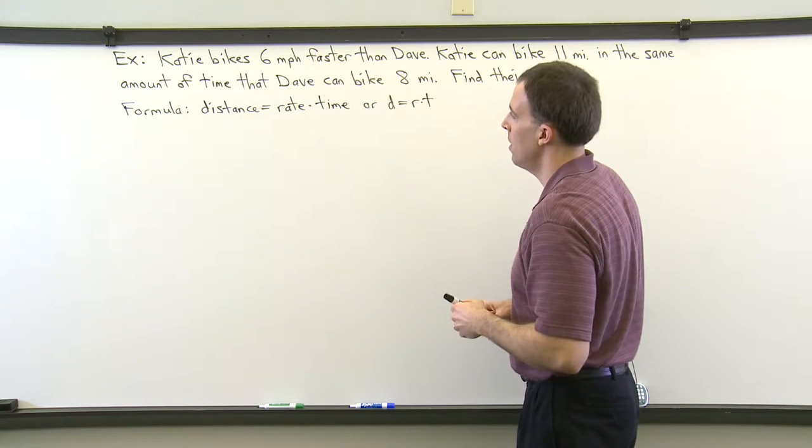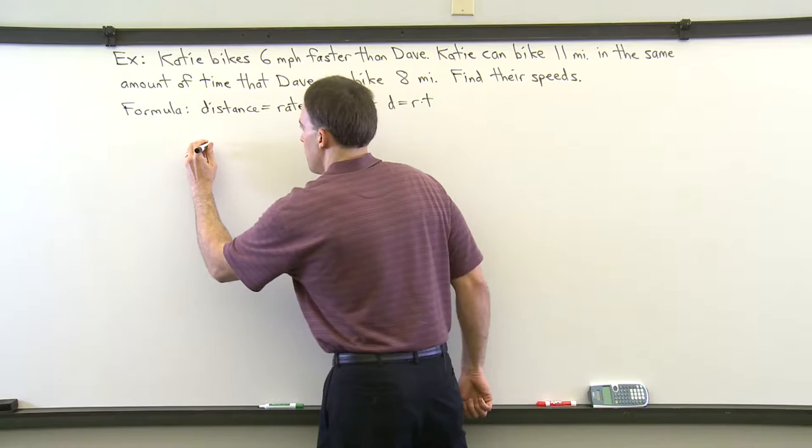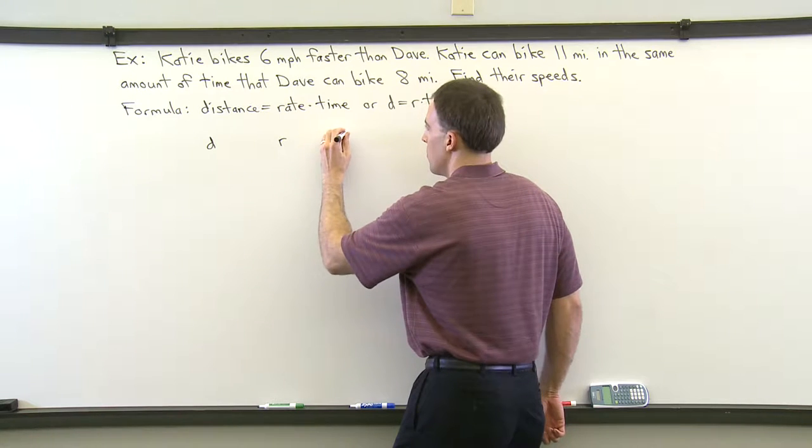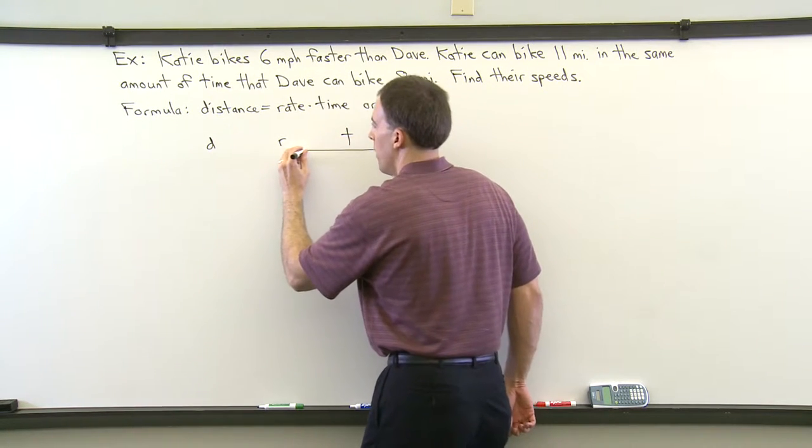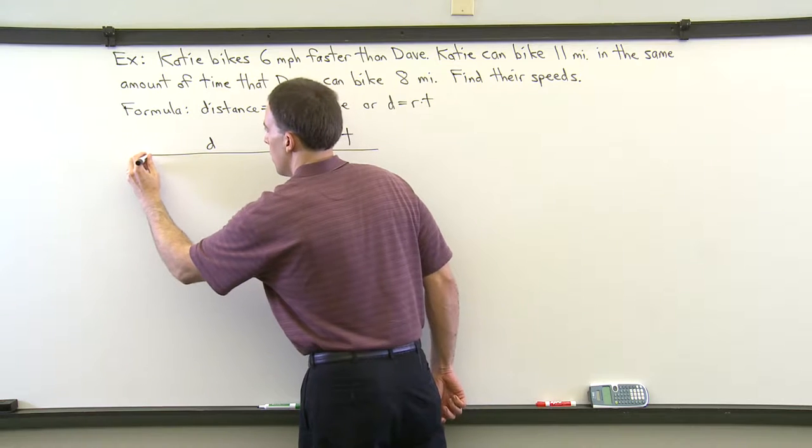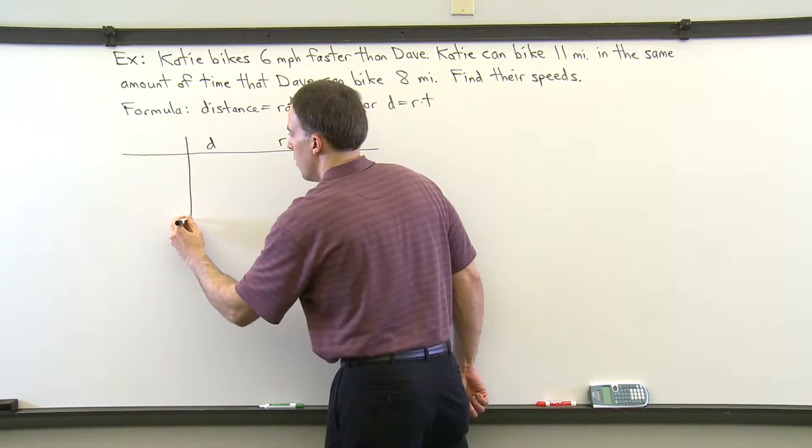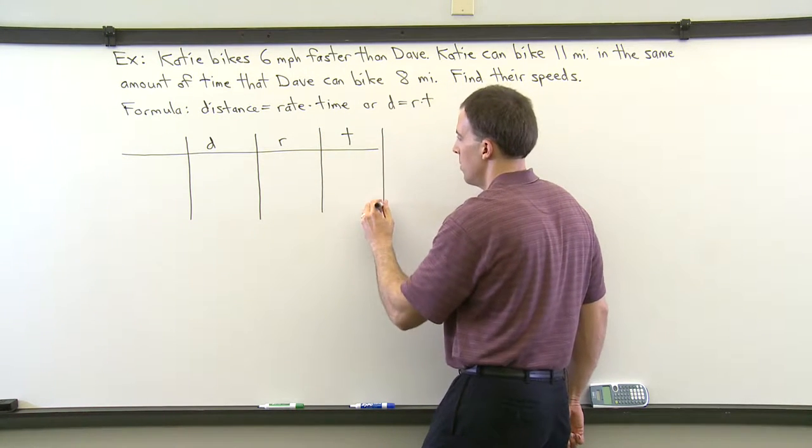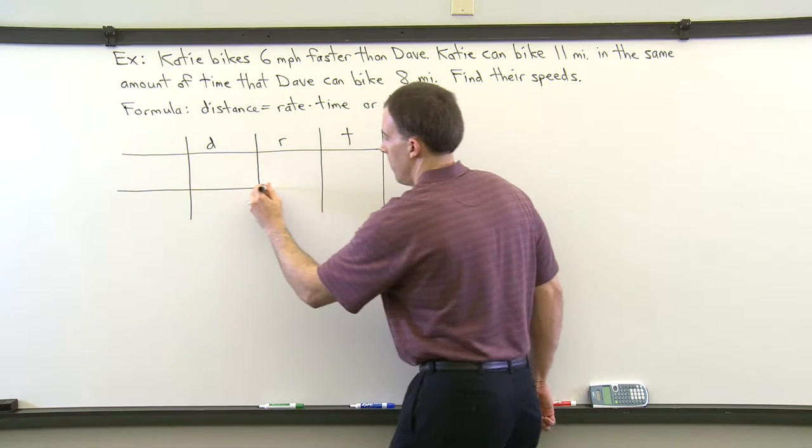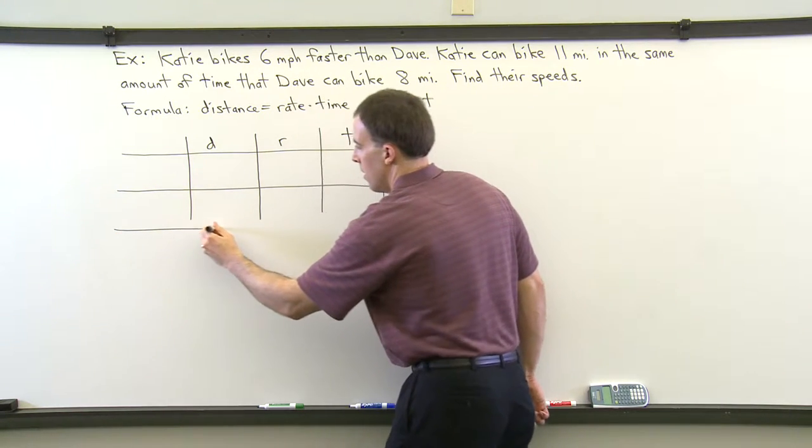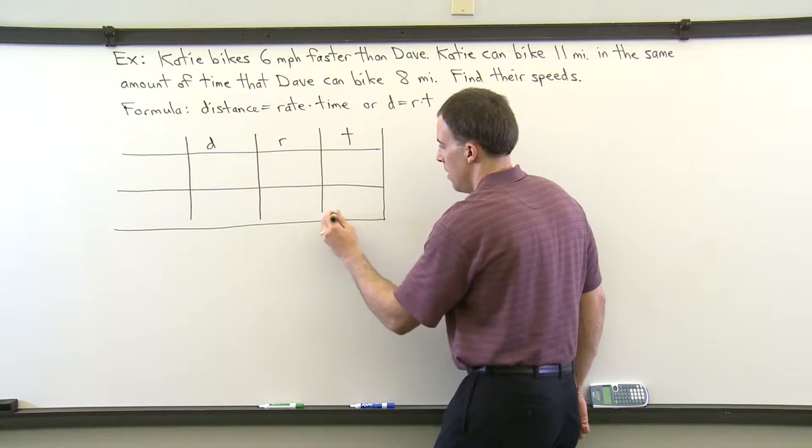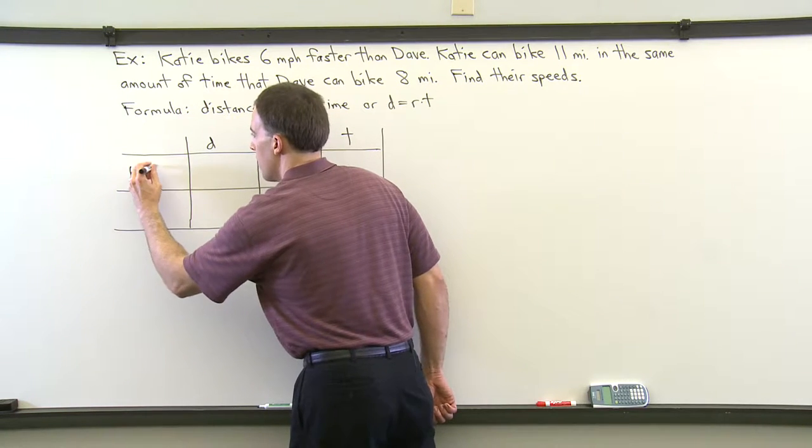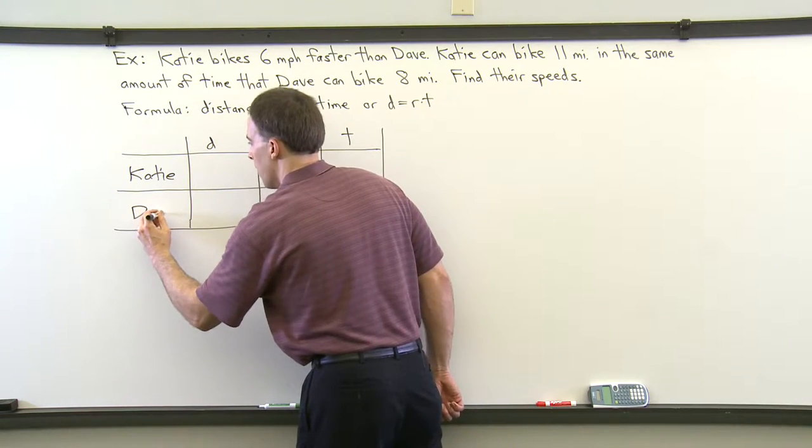Using this formula, what I always do is set up a chart or a table to organize the given information with a column for the distances, a column for the rates, and a column for the time. So I'm going to show you a good way to organize the information and then figure out what to do. We're going to have two rows going across. One row for the first person's information and then another row for the second person's information. So we've got Katie and Dave.